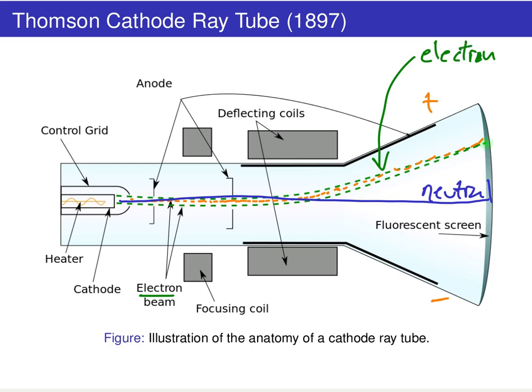So we have this electron beam being deflected, and we conclude that electrically neutral matter can be broken down and you can pull out negatively charged particles. Now I want you to use this fact to build an initial model of the atom based only on J.J. Thomson's cathode ray tube experiment.